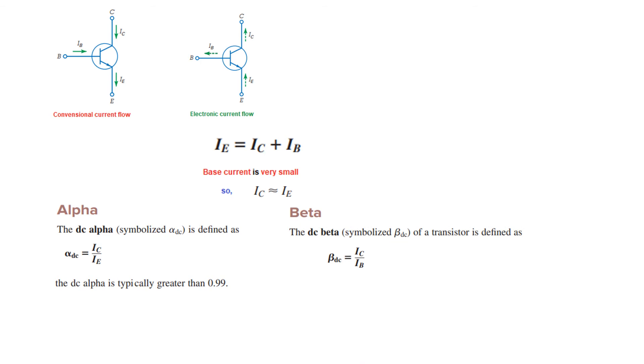Then we define another term. It is called beta. And beta is defined by IC over IB. So the collector current divided by the base current. This time. And this is called the current gain.